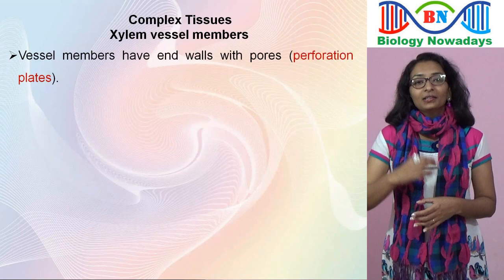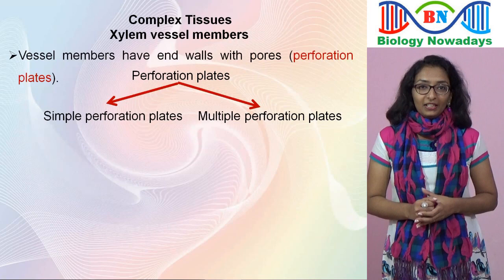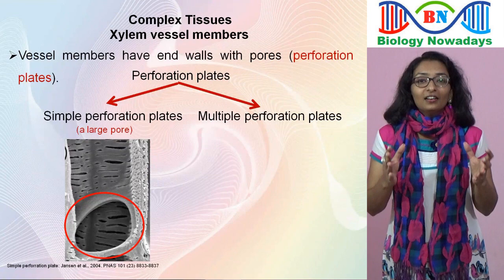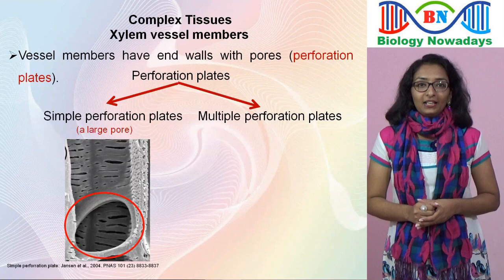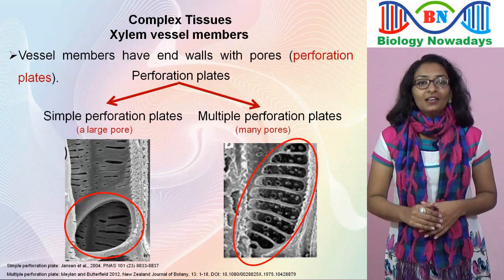There are two kinds of perforation plates: simple perforation plates and multiple perforation plates. In a simple perforation plate, the cross wall or end wall of the vessel member has only a large hole — such vessels will just look like our water pipes. In a multiple perforation plate, the end wall contains a number of pores. Simple perforation plate is more advanced than the multiple perforation plate.